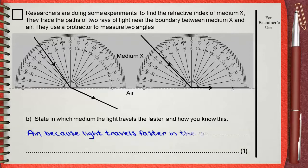From question A, we decided that air is the less dense and medium X is the more dense. So of course light will travel faster in air than medium X. So air, because light travels faster in the optically less dense medium. This is full one mark.